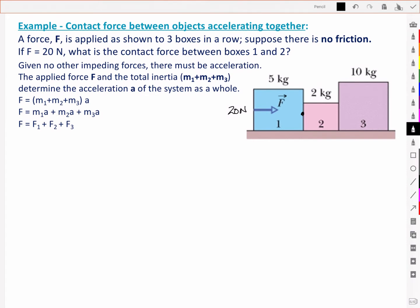Given there's no other impeding forces, like friction, there must be acceleration. And so the applied force F here and the total inertia, that is all three masses together, determine the acceleration A of the system as a whole. So that's key to this problem.